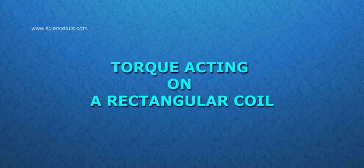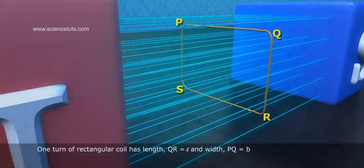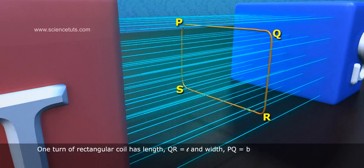Torque acting on a rectangular coil. One turn of rectangular coil has length QR equals to L and width PQ equals to B.